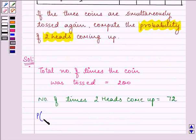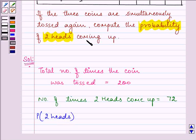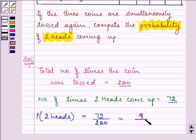The probability that 2 heads are coming when we are tossing 3 coins simultaneously again, that is equal to 72 times out of this 200 times. On simplifying, we have the answer as 9 by 25.